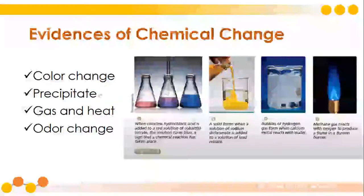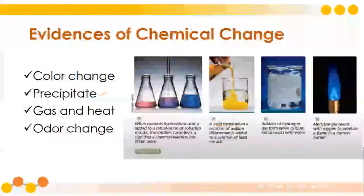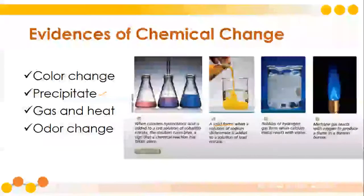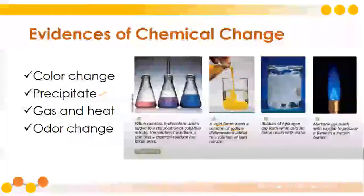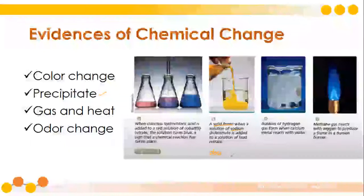There is also the existence of a precipitate. A precipitate is a solid residue that forms when you combine two chemicals together. For example, a solution of sodium dichromate added to a solution of lead nitrate results in a yellow precipitate. A precipitate does not dissolve in a solution — it's a solid that forms in a solution.